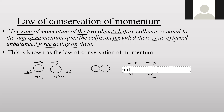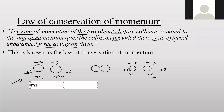The mass is m1 for the first body and m2 for the second body. Momentum is calculated by multiplying mass and velocity. So before collision, the total momentum is m1u1 + m2u2. According to the law, this equals the momentum after the collision, which is m1v1 + m2v2.